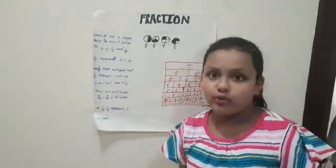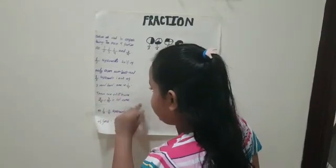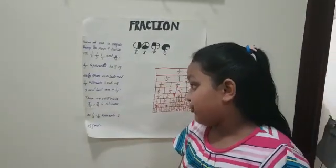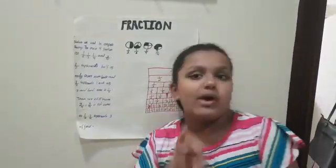One-fourth represents one out of four, like a quarter. Then we have three-fourths. Three-fourths is not the same as one-fourth. Three-fourths represents three out of four, but one-fourth represents one out of four.